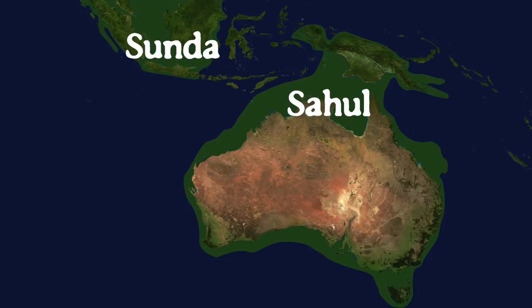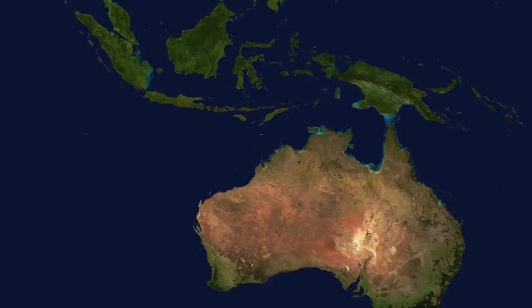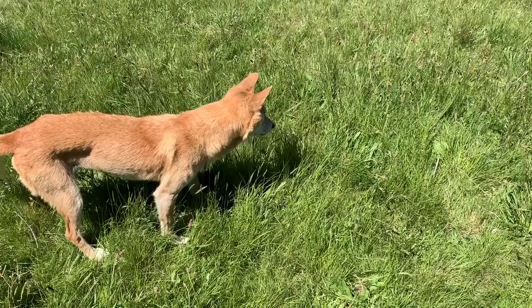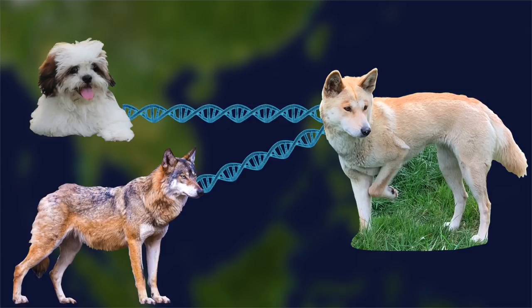Dingoes share some DNA with dogs and with wolves. This means that the dingoes' ancestors could have been a result of early domestic dogs and wolves interbreeding. It's hard to say exactly how long ago this happened though.